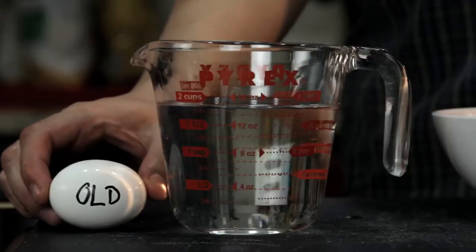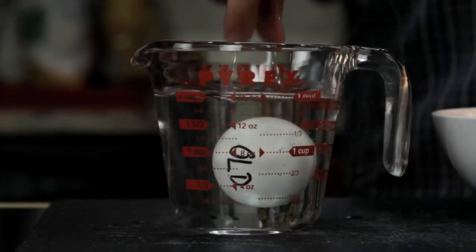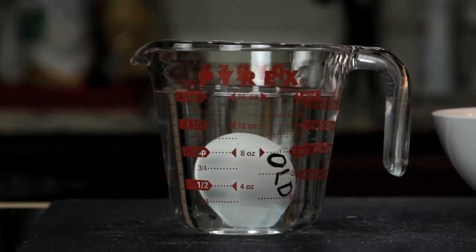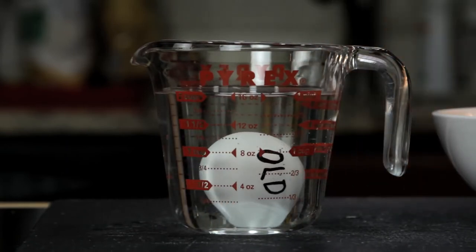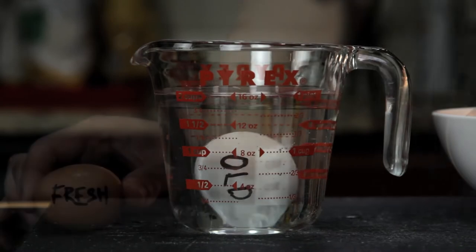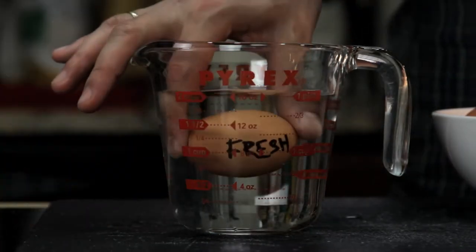You can also tell how fresh an egg is by carefully putting it into a cup of water. As an egg ages, the air pocket in the fat end is going to get bigger and bigger, which will make the egg stand upright, or sometimes even float. A really fresh egg will sink and lie flat on its back, like this.